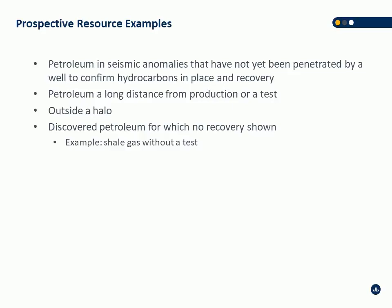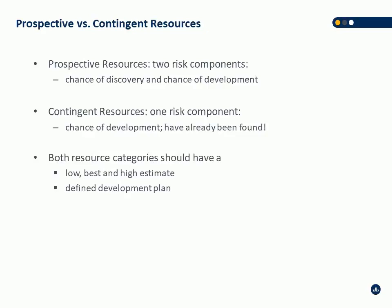Examples of prospective resources include strata that have not even been penetrated; petroleum a long distance from the nearest production tests — that's the shale gas example where you're miles from the nearest well but you know the zone is present; outside of halos; and discovered petroleum for which no recovery is shown — where you've penetrated a zone, know there are hydrocarbons, but can't prove it's productive at commercial rates. Prospective resources have two risk components — discovery and development — while contingent resources have one: chance of development. Both should have low, best, and high estimates and a defined development plan.